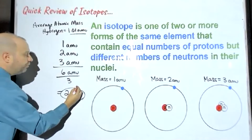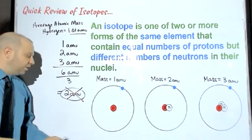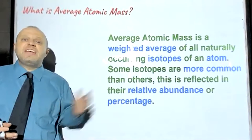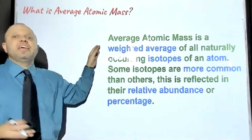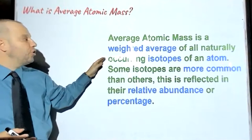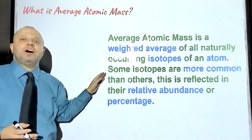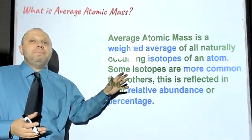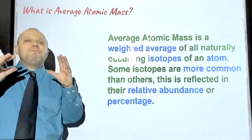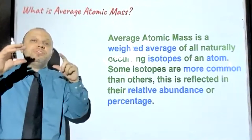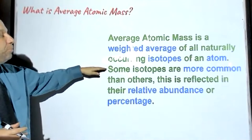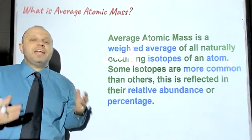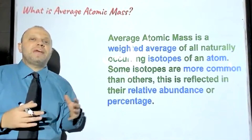The answer is not 2 AMU, so a simple average is not correct. We have to figure out how to calculate a weighted average. Average atomic mass is a weighted average of all naturally occurring isotopes of an atom. Some isotopes are more common than others — you might have 50% of one type and 10% of another — and your average will be closest to whichever one has the largest percentage, which is reflected in their relative abundance.